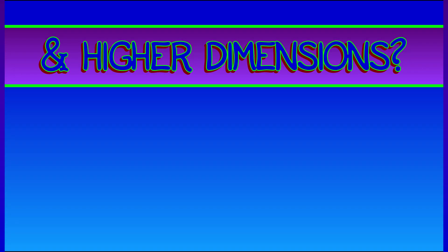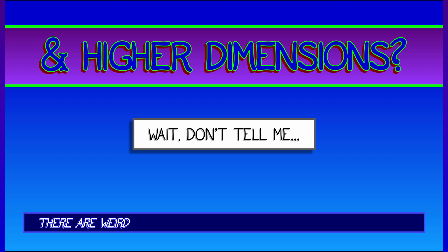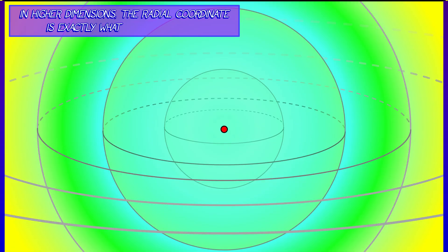All right, that is spherical coordinates. But what happens in higher dimensions? Wait, don't tell me there's weird, crazy kinds of spherical coordinates in n-dimensional space, right? Right. But it's not that weird.